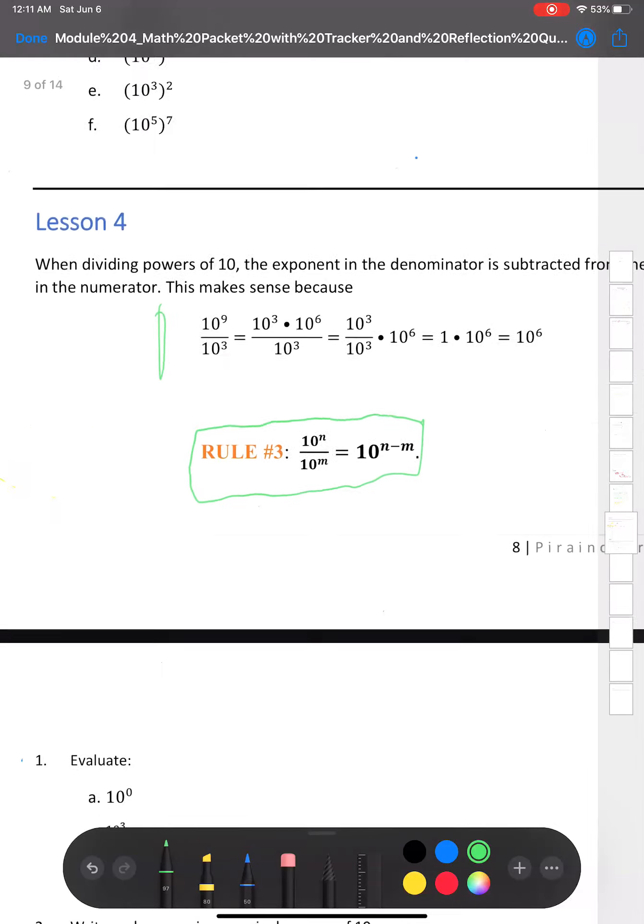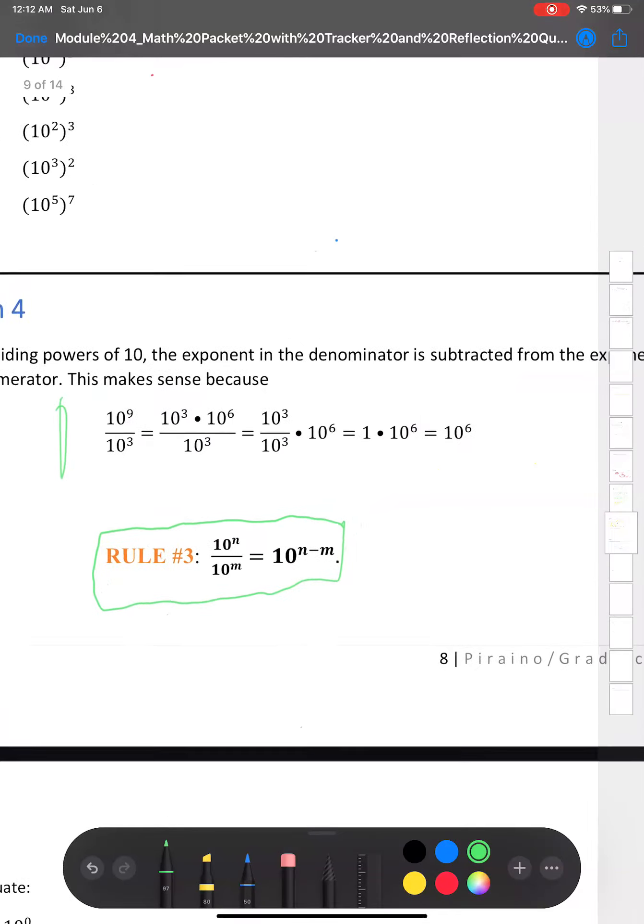Let's look at this right here. This makes sense because 10 to the ninth divided by 10 to the third is equal to 10 to the third power times 10 to the sixth power divided by 10 to the third power. As you guys can see, the 10 to the third power and 10 to the third power divided by 10 to the third power, those two cancel and they become one. And then all we have left here is 10 to the sixth power. So the answer is 10 to the sixth power.